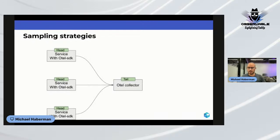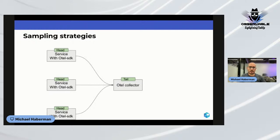There are two sampling strategies. Head sampling runs within the OpenTelemetry SDK — while the service creates spans, the SDK decides whether to send data to the collector or not. The decision is made at the SDK level. Tail sampling runs within the OpenTelemetry Collector — it looks at spans or the complete trace in the backend before making a sampling decision. Both have pros and cons.